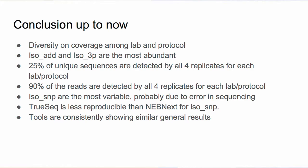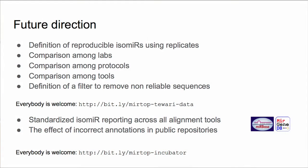Isomir addition and isomir three prime are the most abundant. There is variability among labs in terms of coverage. Isomir SNPs are highly variable, likely due to sequencing errors. Protocol two is more variable in SNPs, but the two protocols are actually fairly consistent. You can see the full figures at mid-top-towari data. The future direction is to identify isomirs reproducible among replicates, then compare them across labs, protocols, and tools, to define how to clean the data at the isomir level.